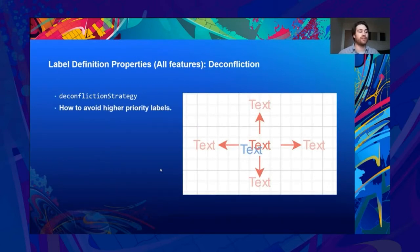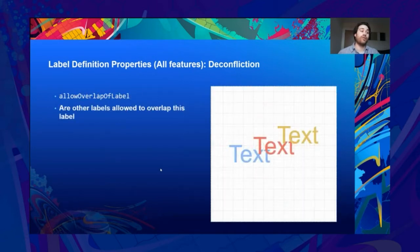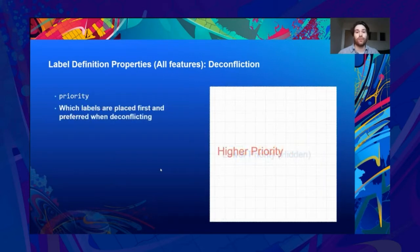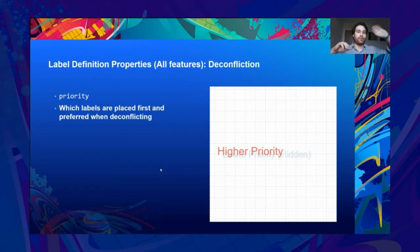Let's get started with deconfliction properties. Deconfliction strategy: setting it to dynamic will move labels from their preferred position around their feature until it can find a place that does not conflict with other labels. Allow overlap of label: this will allow other labels to overlap this one during deconfliction. Priority: which labels are placed first and preferred when deconflicting — set by a numerical value. The lower the value (towards zero), the more valuable the label definition is considered. Think of it as a queue where priority one is processed before priority two.